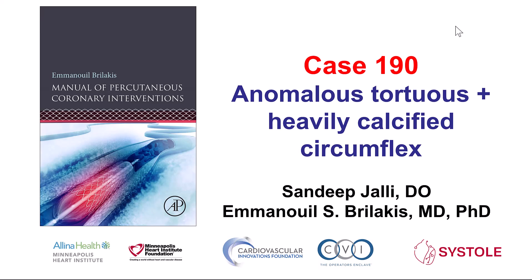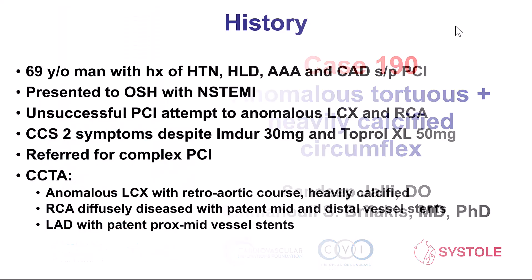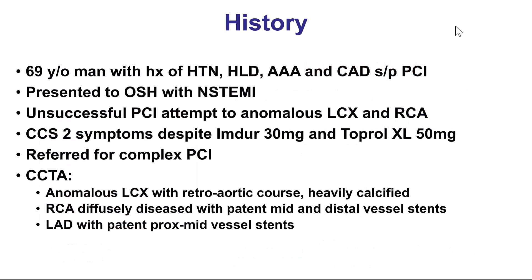This is a case of an anomalous circumflex that had a highly tortuous origin as well as heavy calcification. The patient was a 69-year-old gentleman with multiple comorbidities who came with non-ST elevation myocardial infarction. He had an anomalous circumflex in a diffusely diseased, heavily calcified right coronary artery with failed PCI.